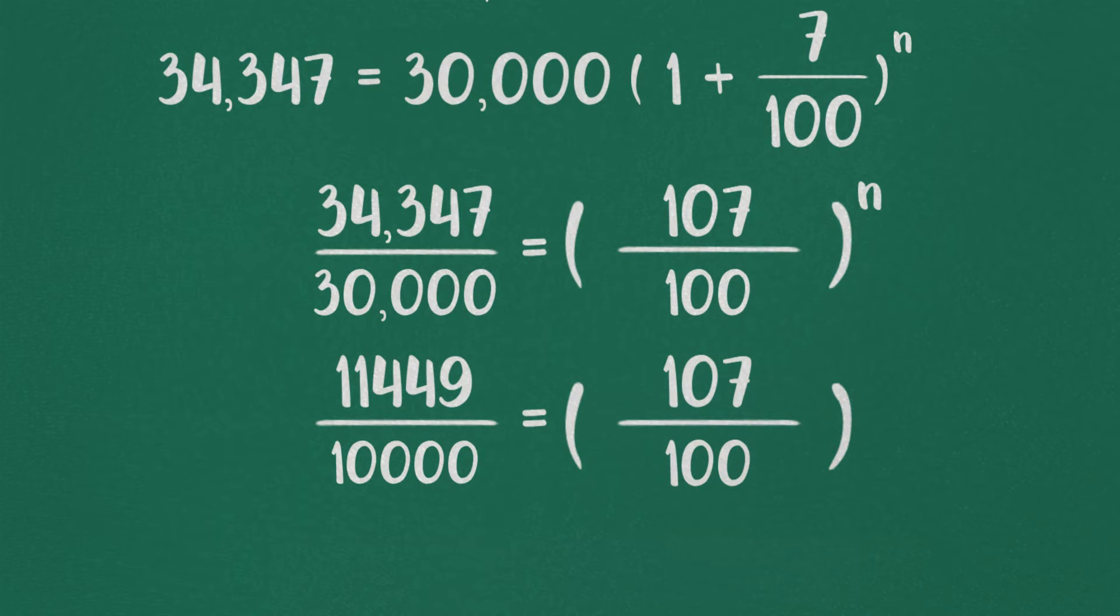Here, 10,000 is the square of 100, so 11,449 must also be the square of 107, which it is.